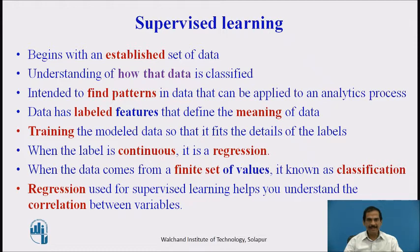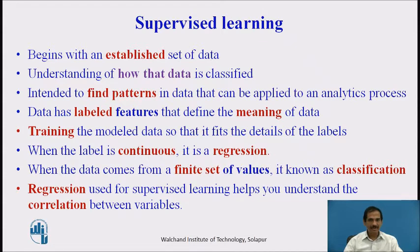Training the model so that it fits the details of the label is necessary. Once we have completed training on the required portion of data — for example, 80% for training and 20% for testing — we evaluate the model. When the label is continuous, it is called a regression environment. When the data comes from a finite set of values, it is known as classification, and we put that data into a particular class.